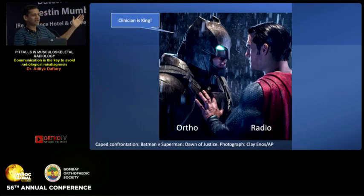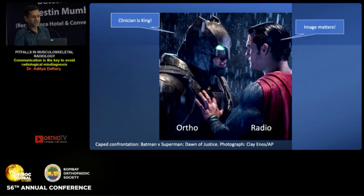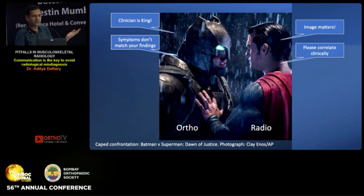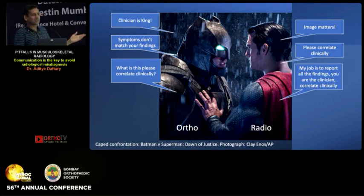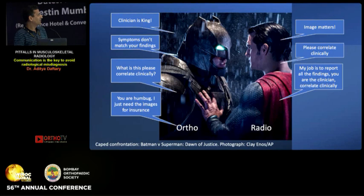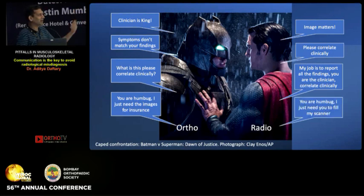Here's the current state of radiology and orthopedic communications — it's pretty much like Batman versus Superman. The clinician says 'clinician is king,' we say 'image matters.' Your symptoms don't match your findings — please correlate clinically. We say our job is to report all the findings, you are the clinician, you correlate clinically. And then finally: 'you are humbug, I just need these images for insurance,' and we say 'I just need to fill up my scanner.' That's the current state of radiology and orthopedic communications.